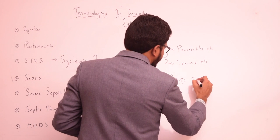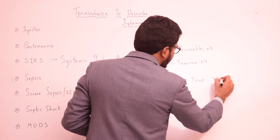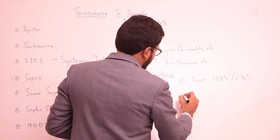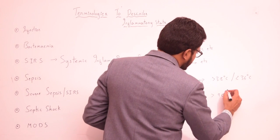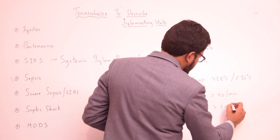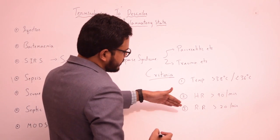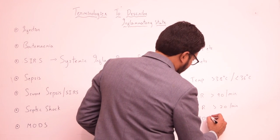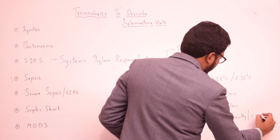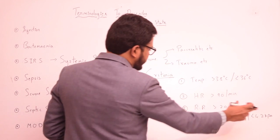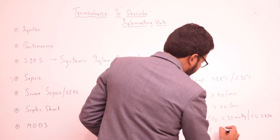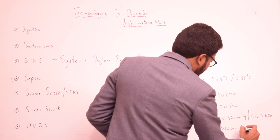The SIRS criteria are: first, body temperature greater than 38°C or less than 36°C; second, heart rate greater than 90 beats per minute; third, respiratory rate greater than 20 cycles per minute; fourth, partial pressure of CO₂ less than 32 mmHg (or less than 4.2 kPa); and fifth, WBC count greater than 12,000 per microliter or less than 4,000 per microliter.